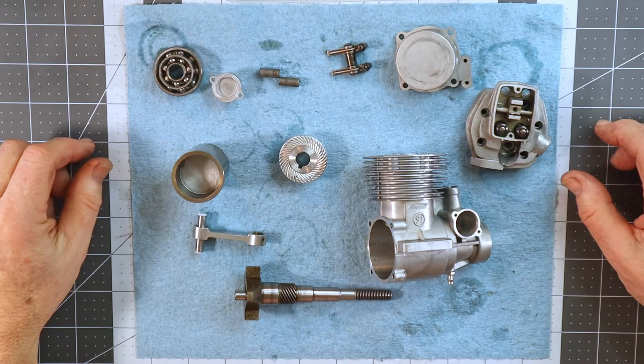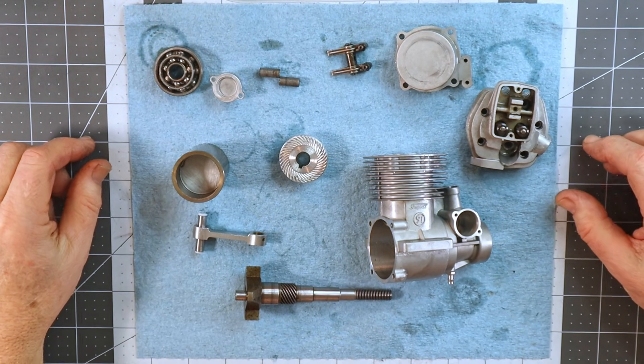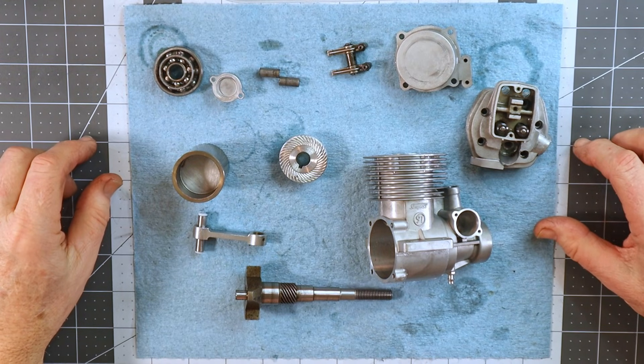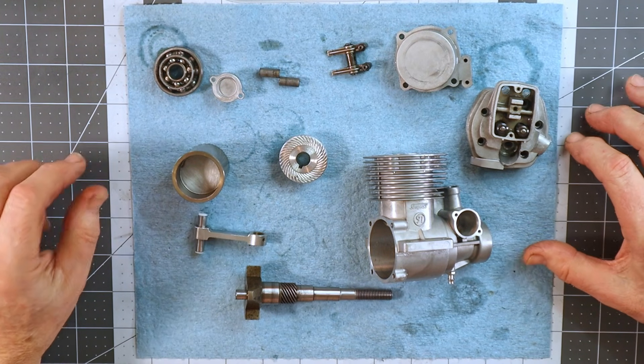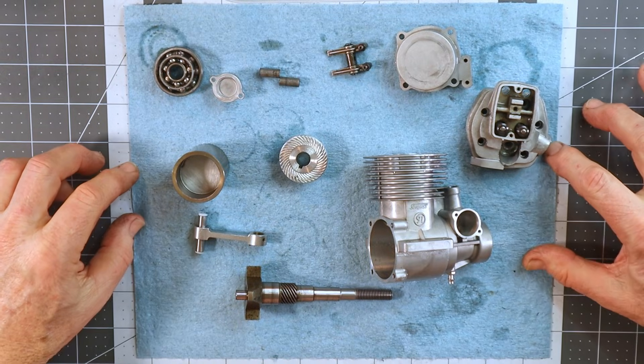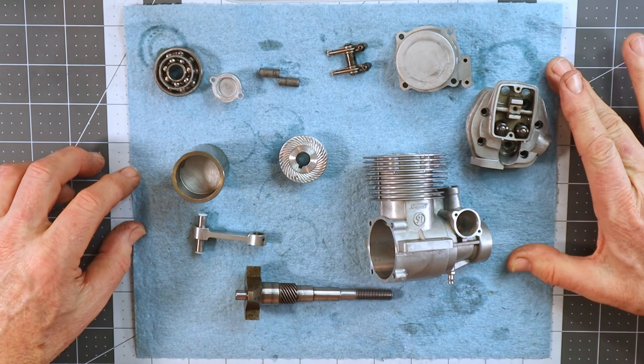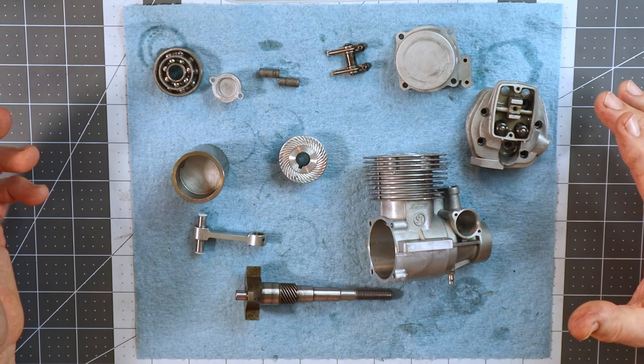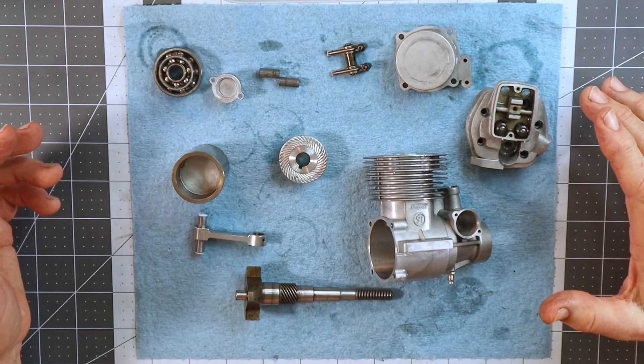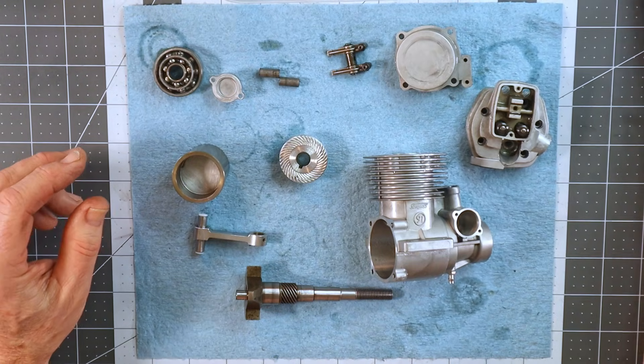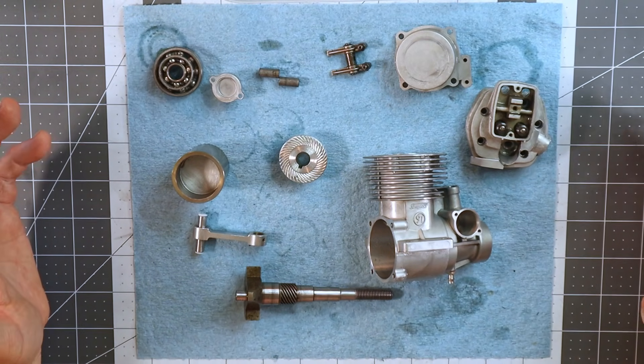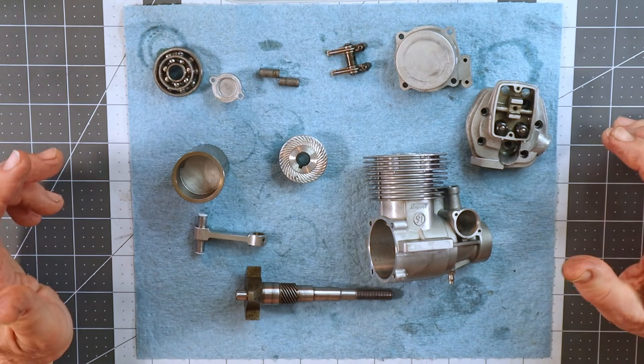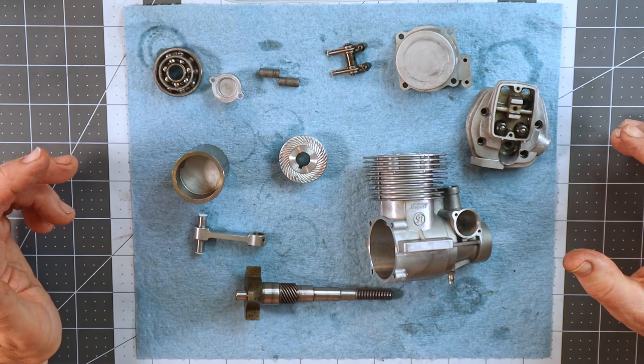Good evening. What I've got on the table today is what I'm calling the Facebook Marketplace 91 Surpass Enigma engine. This is an engine I just did a disassembly video on yesterday. It was very inexpensive, under $100 on Facebook, with really no real information on it. As I discovered in that disassembly, there was quite a bit of damage to it.